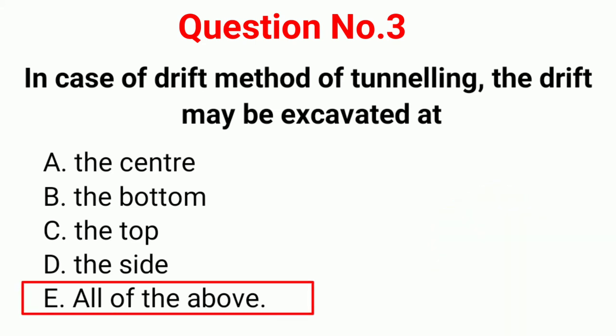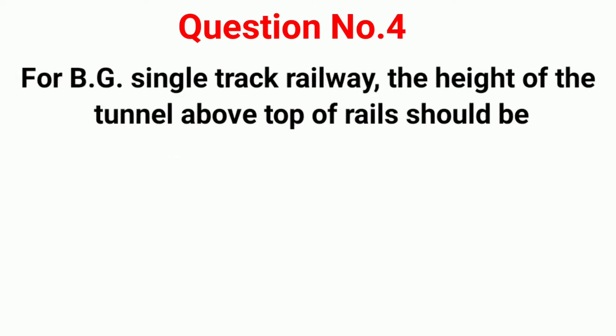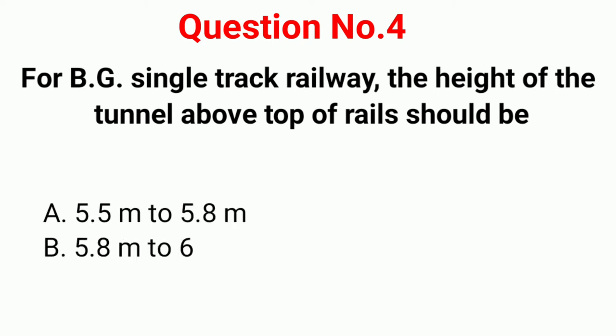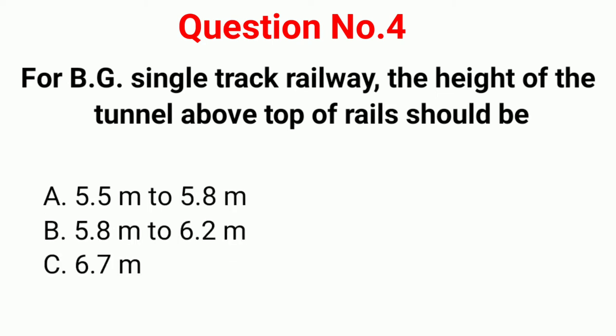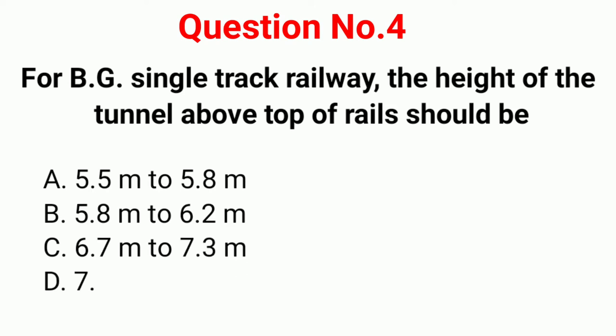Question number 4. For broad gauge single track railway, the height of the tunnel above top of rails should be: Option A: 5.5 meter to 5.8 meter. Option B: 5.8 meter to 6.2 meter. Option C: 6.7 meter to 7.3 meter. Option D: 7.3 meter to 7.5 meter.